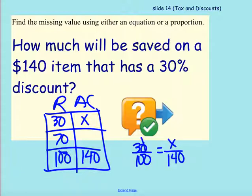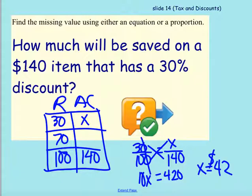And here I'm going to simplify a little bit. 3 over 10, and I'm going to cross multiply to say that we get 10x is equal to, well, 140 times 3, which gives me 420. And we divide by 10 and see that x, I'm going to save $42. Which means when I actually get up to the register and pay that 70%, I'm going to take off $42 and have to pay $98.